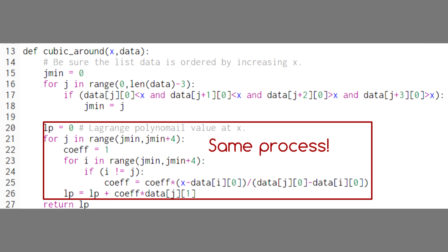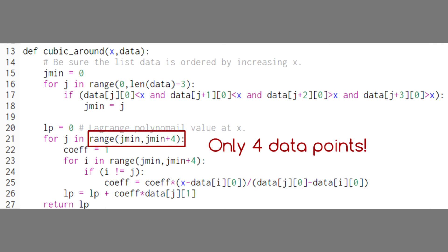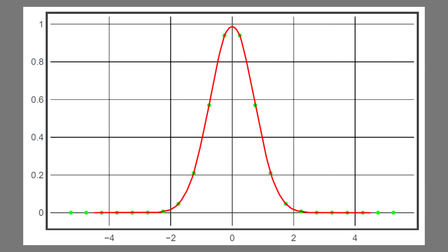Then, we set up our Lagrange polynomial just like last time, but we're only using these four data points, not the entire set of data. The result behaves much better at the endpoints, because we're not picking up those unnecessarily high-order terms. And we still get a guarantee that the polynomial will pass through every data point exactly.